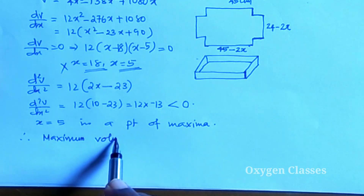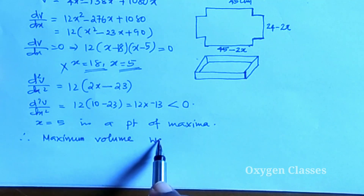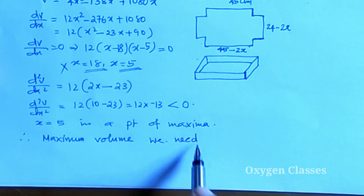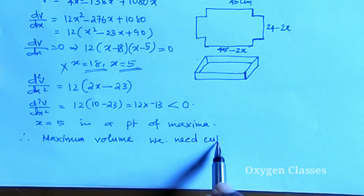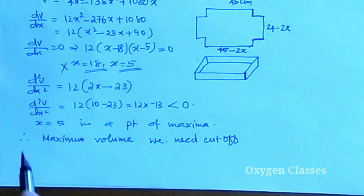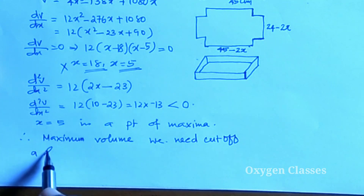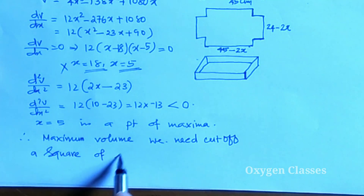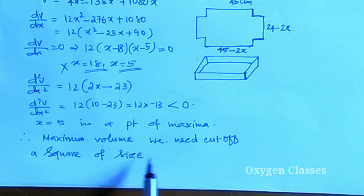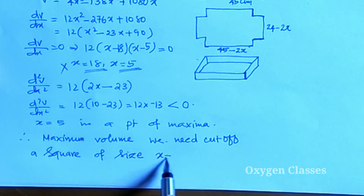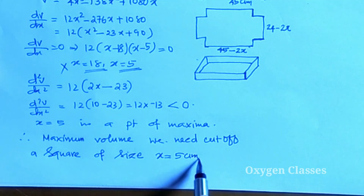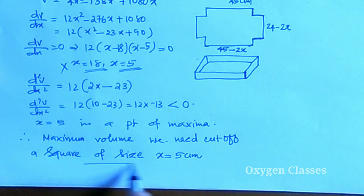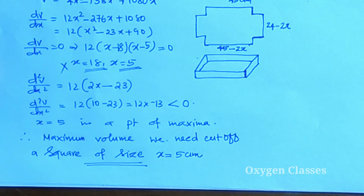x = 5 is a point of maxima. We need to cut off squares of size x = 5 cm from each corner. This is the final answer.